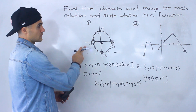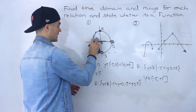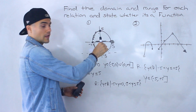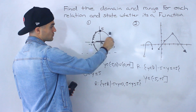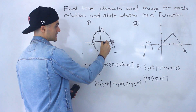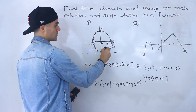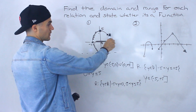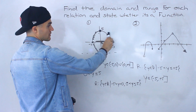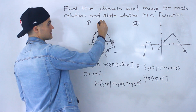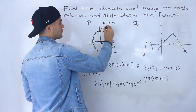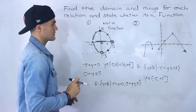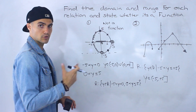Now we have to state whether graph one is a function or not. Running the vertical line test, notice there are many places where it fails — for example, at a single x value there are two defined y values. You can't have multiple y values at a single x value. So this relation is not a function.